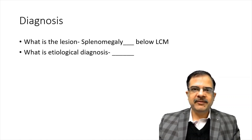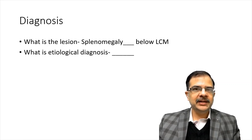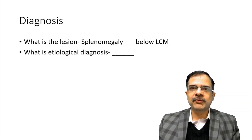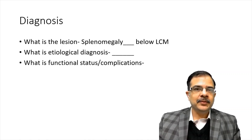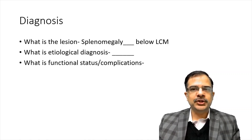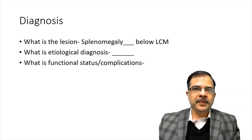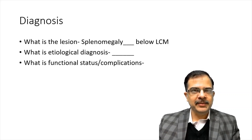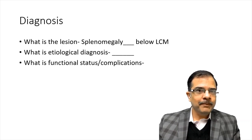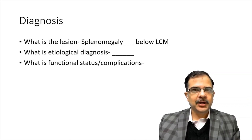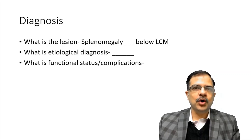If we get chronic liver failure signs, we will say the etiology can be portal hypertension. If we get clinical signs of sarcoidosis, the differential diagnosis is sarcoidosis. We should give at least three or four differential diagnoses based on clinical examination only. The third point is how the patient is being affected — complications of splenomegaly: anemia causing dyspnea, or bleeding tendency due to low platelet count. We will mention whether these complications are present or absent.